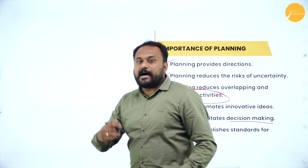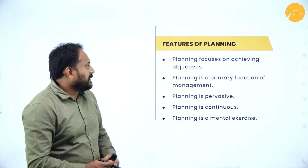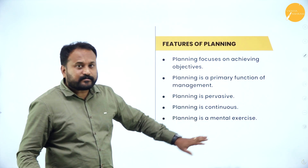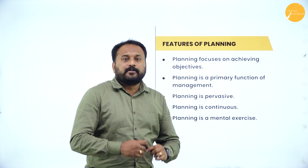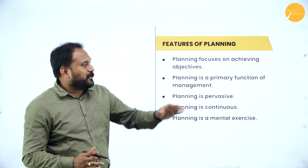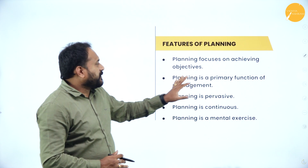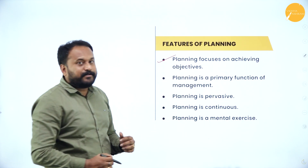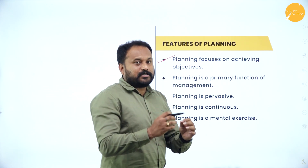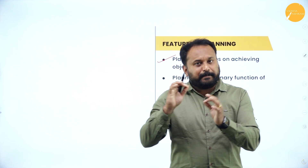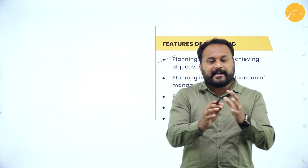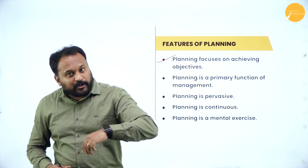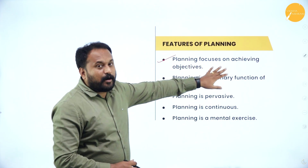After importance, we move to the features of planning. Again, this question can come for four marks, so study any four points and explain them. The first feature is planning focuses on achieving objectives. Any process of management — be it planning, organizing, staffing, directing, and controlling — they always want to achieve the objectives.